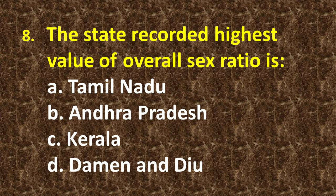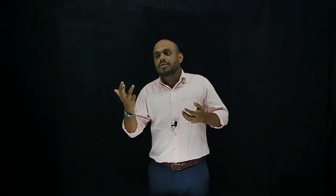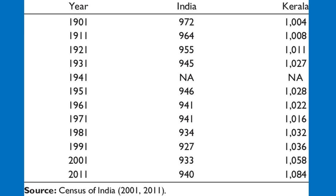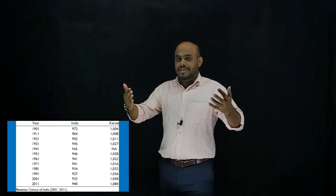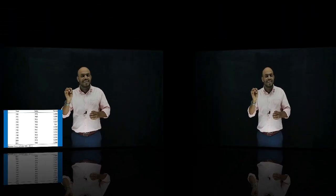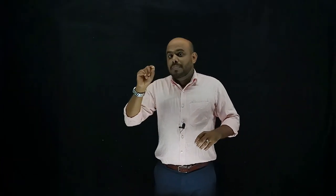Eighth question: which state recorded the highest overall sex ratio? The answer is Kerala. Kerala is renowned for human development and exceptional social development — lowest infant mortality, lowest maternal mortality, highest sex ratio, highest literacy. Kerala tops national human development indicators.